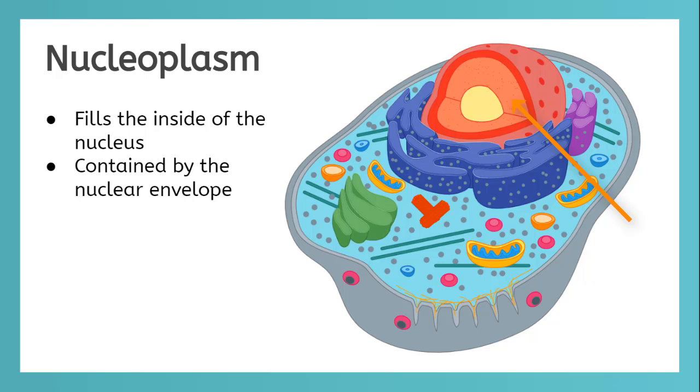The light red material that surrounds the nucleolus and fills up the inside of the nuclear envelope is called nucleoplasm. Its job is similar to cytoplasm, but it always stays inside the nuclear envelope.